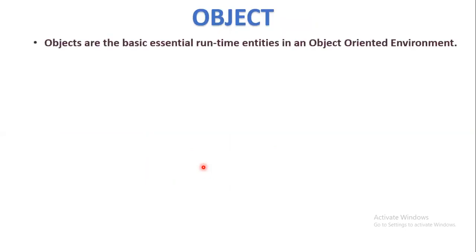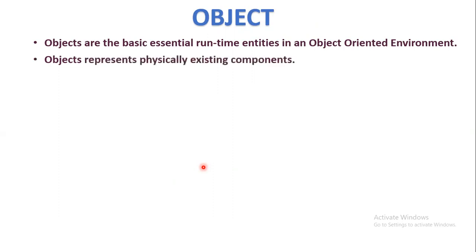The first principle is object. Objects are the basic essential runtime entities in an object-oriented environment. An object is a physically existing component. For example, a pen is an object, a mobile phone is an object, a chalk piece is an object, a man is an object — everything in the real world that physically exists is treated as an object.